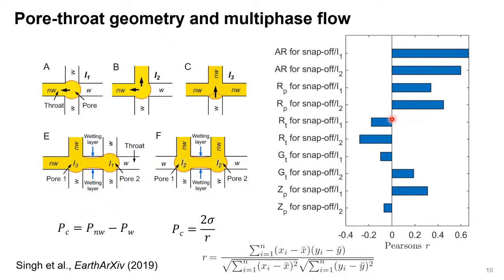We also did correlations — we looked at which parameters are mostly correlating. For snap-off in the I1 event geometry, if the correlation coefficient is zero it's not correlating; if it's one or minus one it's correlating perfectly. We see very strong correlation for I1 and I2 with aspect ratio, but with pore radius, throat radius, shape factor of throat, and coordination number, there are some correlations but not as strong as with aspect ratios.